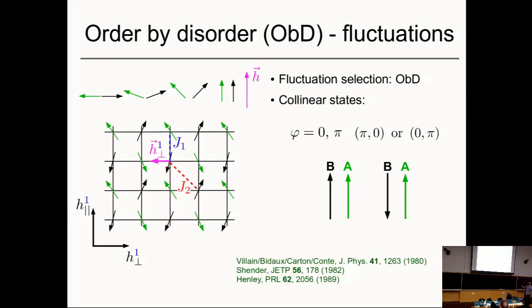The field is zero, and the fluctuations of the field point in some direction, so this sublattice would like to be perpendicular to that one. Immediately you see you have two options: either the two are parallel or they are anti-parallel — they will be collinear just because of that. If they are collinear, they are perpendicular to each other's fluctuations and couple to these fluctuations the way the usual antiferromagnet couples to an external field. That's how we choose collinear states — this is why we call it order by disorder.